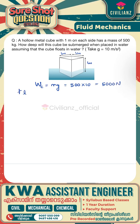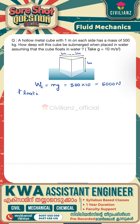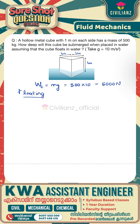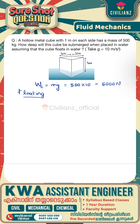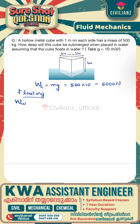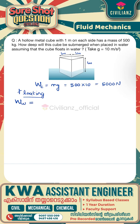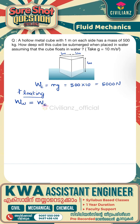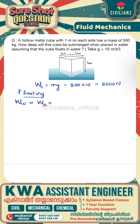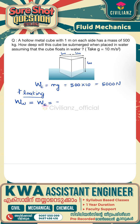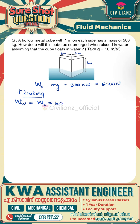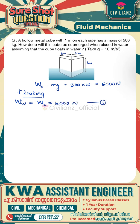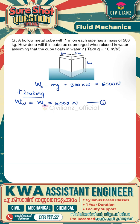The object floating condition is specified. The weight of water displaced will be equal to the weight of the object itself, which is the weight of the cube itself — that is equal to 5000 newton. Let this be equation number 1.